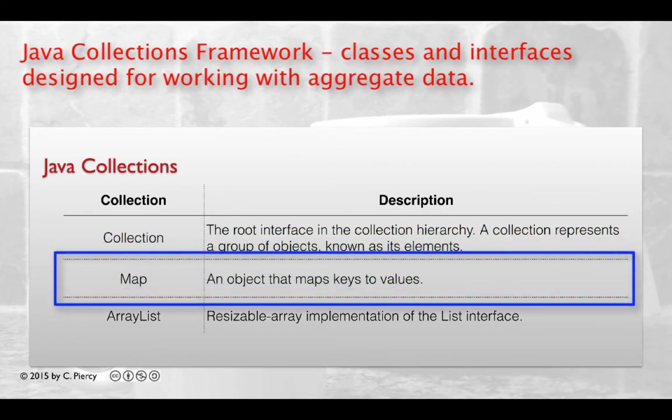A map is an object that maps keys to values. A map cannot contain duplicate keys. Each key can map to at most one value. Think of a map as a kind of lookup table with two columns. You look down the first column of the key and then get back the associated value in the second column.